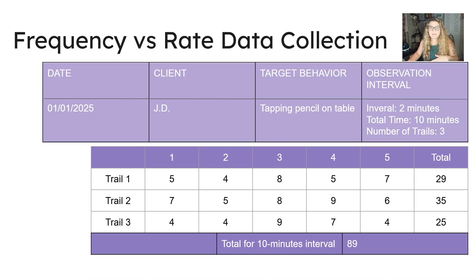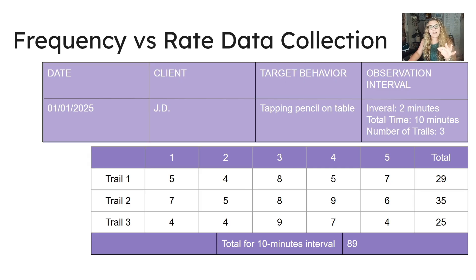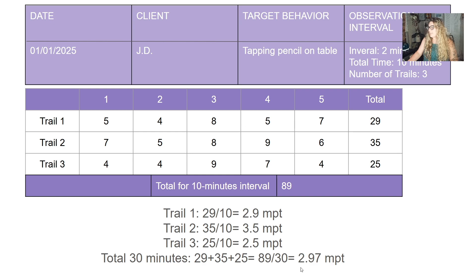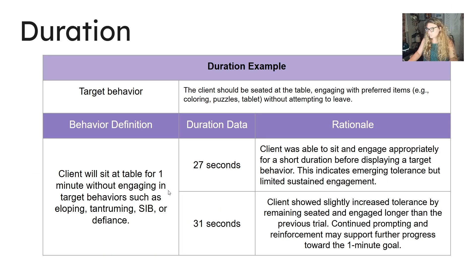The data in the chart shows the number of times — the frequency — that the client has tapped her pencil on the table during two-minute intervals. In trial one, the client tapped her pencil a total of 29 times over 10 minutes, giving a rate of 2.9 taps per minute. For the entire 30 minutes across trials one through three, you total all the counts to get 89 and divide by 30, which again gives you 2.9 taps per minute as your rate.